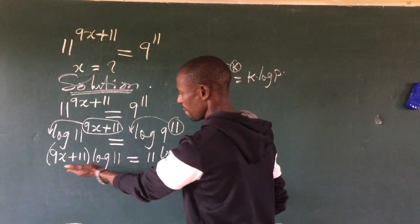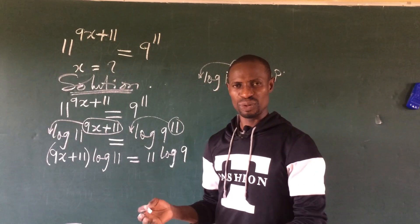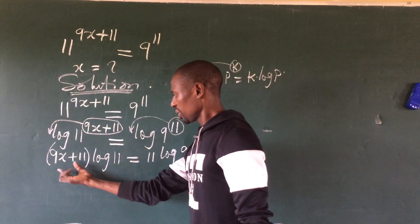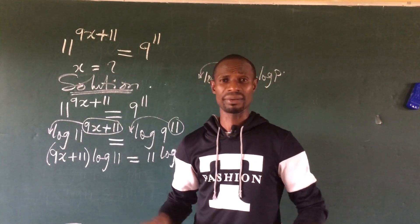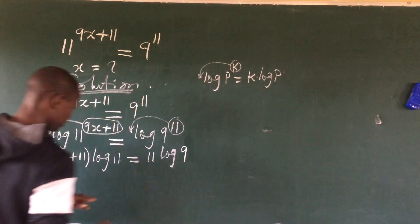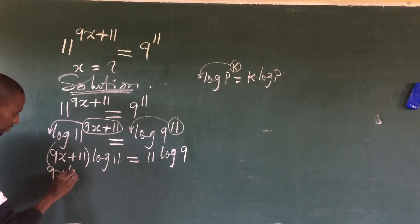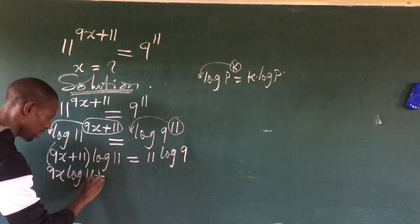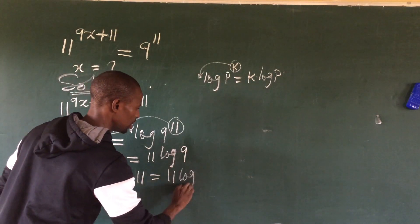We could divide both sides by log 11, but when I did that I arrived at an answer which doesn't really fit into the equation. So what we do here is to use log 11 to expand the left-hand side of the equation. From here, expanding the bracket gives us: 9x times log 11, plus 11 log 11, equal to 11 log 9.